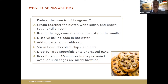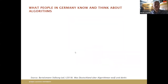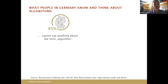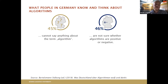What computers do is follow a couple of steps to deliver something to you. As an anecdote before I get to examples: what people in Germany know and think about algorithms. If you ask people in Germany — and I cannot claim how representative this is for the world's population — what is an algorithm, then 45 percent say they don't know and cannot say anything about the term.